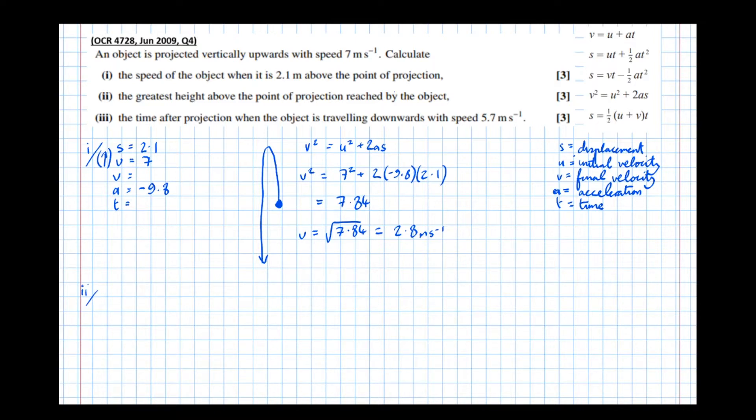Okay, part 2. The greatest height above the point of projection reached by the object. So again, s, u, v, a, t. So the greatest height, we don't know. S is what we're trying to find. The initial velocity, we're told, was 7.